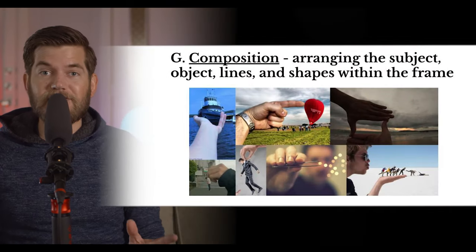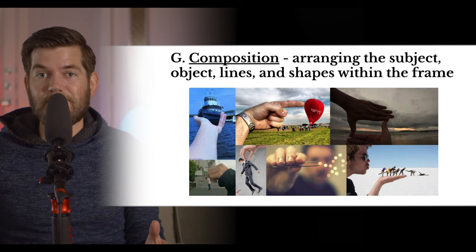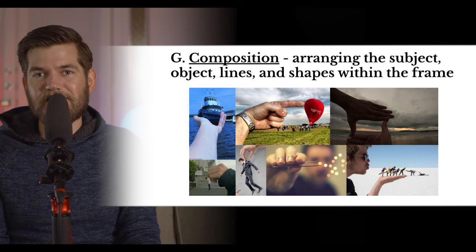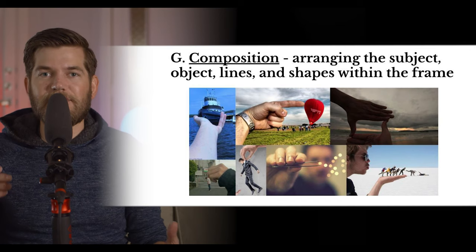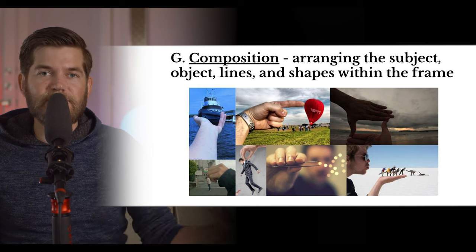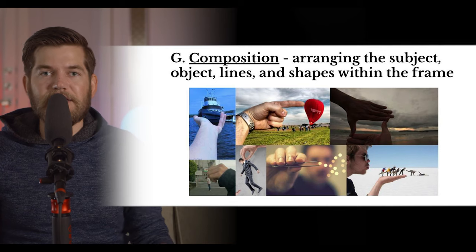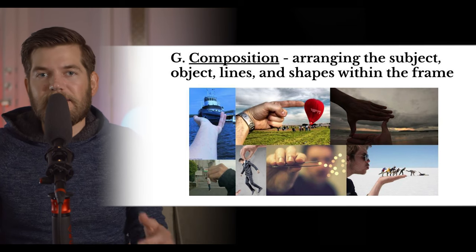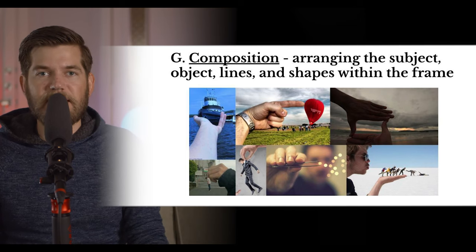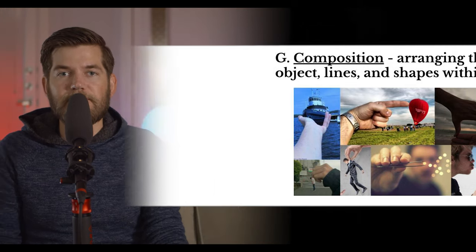Our first term today is composition. Composition is all about arranging the subject, objects, lines, and shapes within the frame. It's a combination of the camera and the mise-en-scene: the director blocks the actors and positions them, the set designers design the set dressing and objects in the scene, and ultimately the cinematographer decides what angle or perspective to view those objects from to create the final composition.